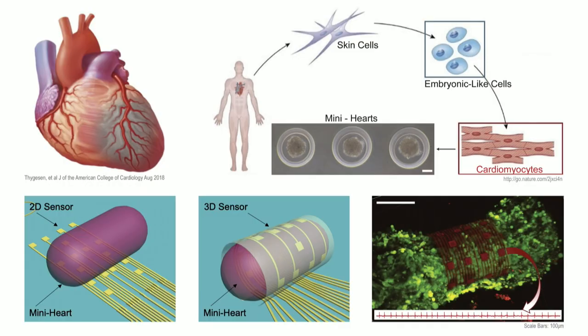Wouldn't it be ideal if we could test these drugs on the person's own heart without any repercussion? In fact, research does provide a way to do so indirectly. We can now take the patient's own cells using a minimally invasive procedure — a pinch of skin or a skin biopsy — and take these cells using chemical factors back in time to their embryonic state. Just like in an embryo, these cells have the potential to become any cell type, including the heart cells called cardiomyocytes. We can then take these cardiomyocytes and out of them make patient-specific mini-hearts.